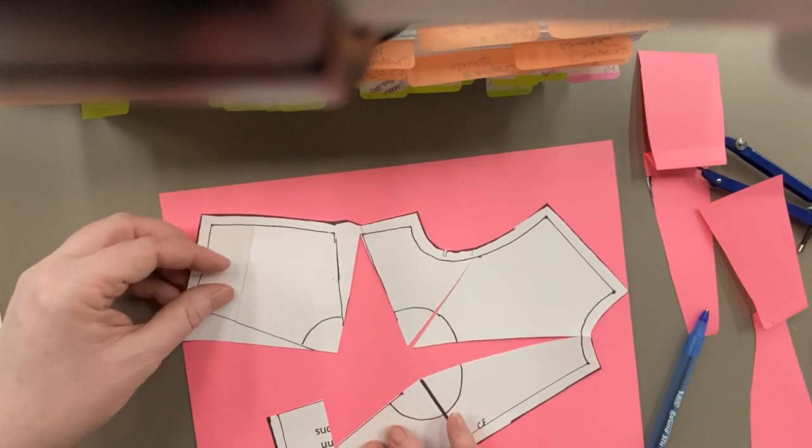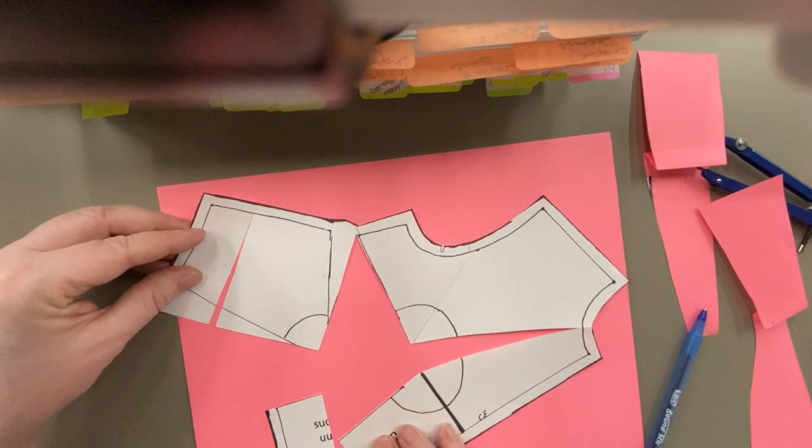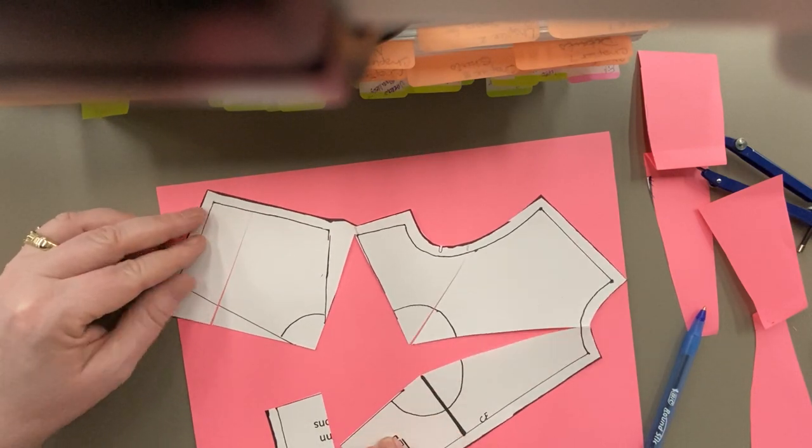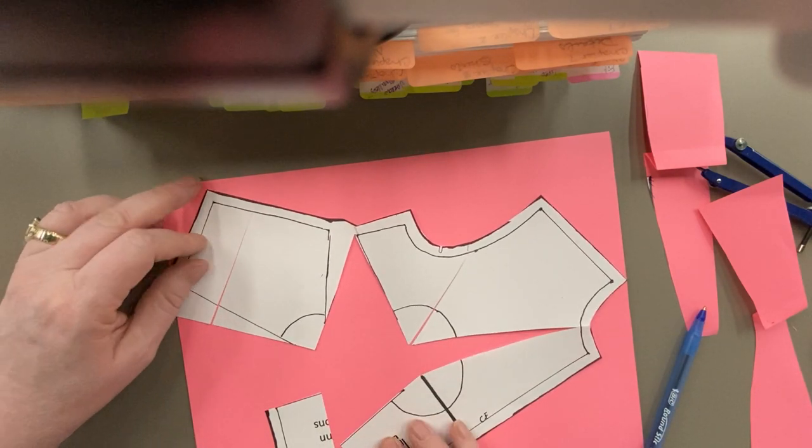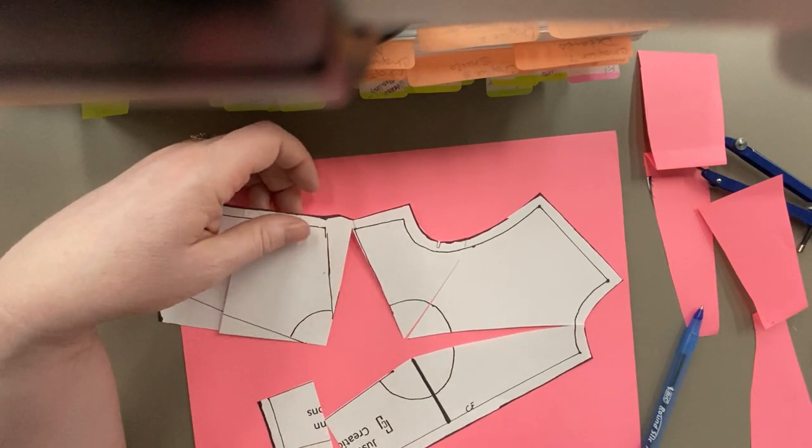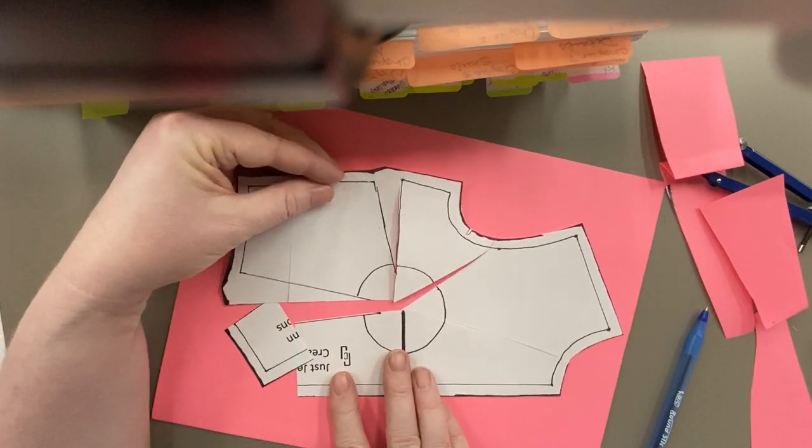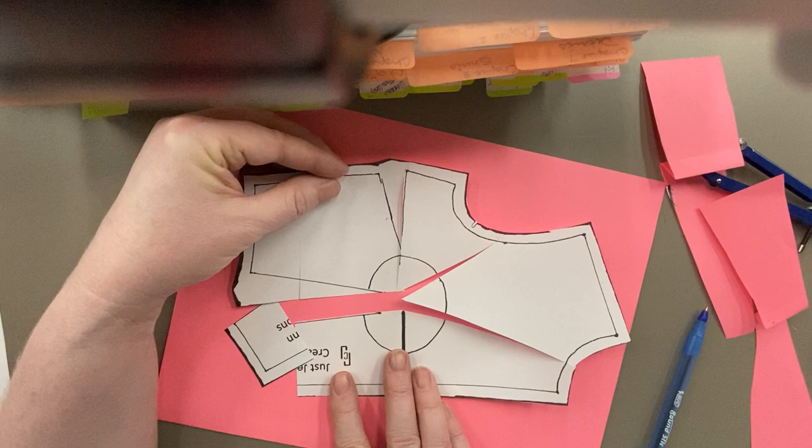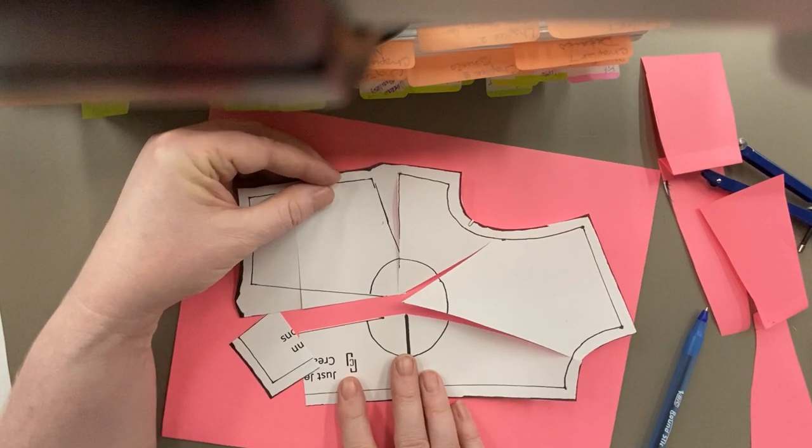It will look like this super sketchy thing. That's pretty normal. If you're increasing, you're going to do the same thing we did in the seam method. You're just going to spread it here at the bust point. But we are decreasing.